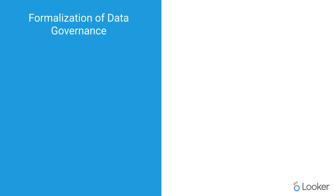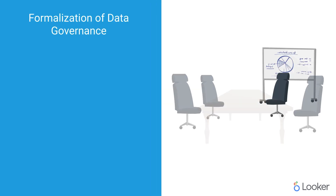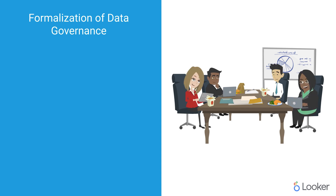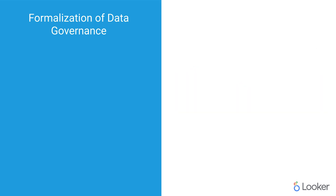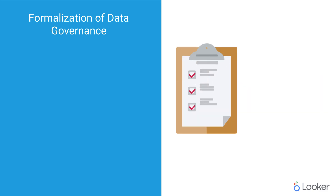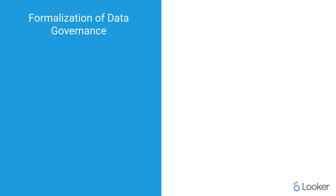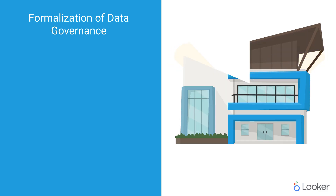A formalization of data governance is accomplished by bringing together campus data owners and other stakeholders. The goal is to establish policies for data access, ensure data quality, and ultimately enable trust in the data so that the campus is able to rely on it to execute on its mission.